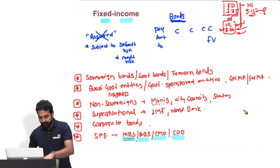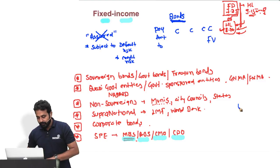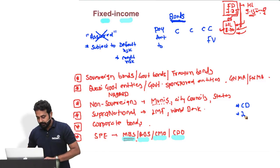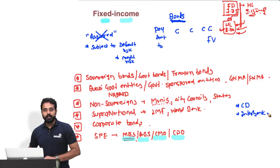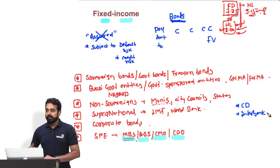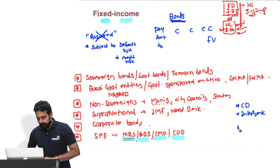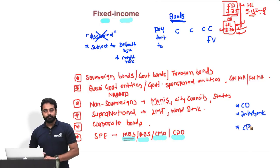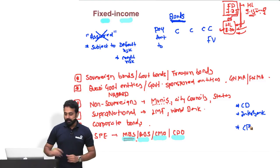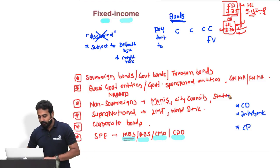In the money market segment, we have certificates of deposit issued by banks, the interbank lending and borrowing market where one bank lends or borrows from another, commercial papers, treasury market products, and treasury bills. That's roughly the spectrum of what we're covering in fixed income.